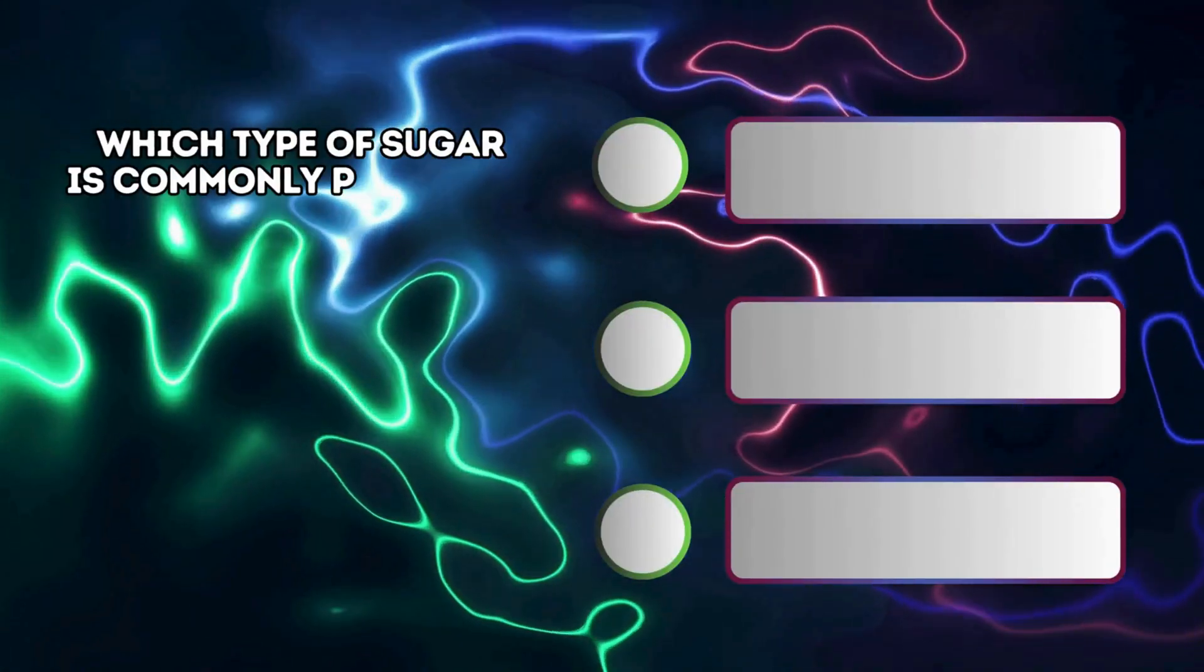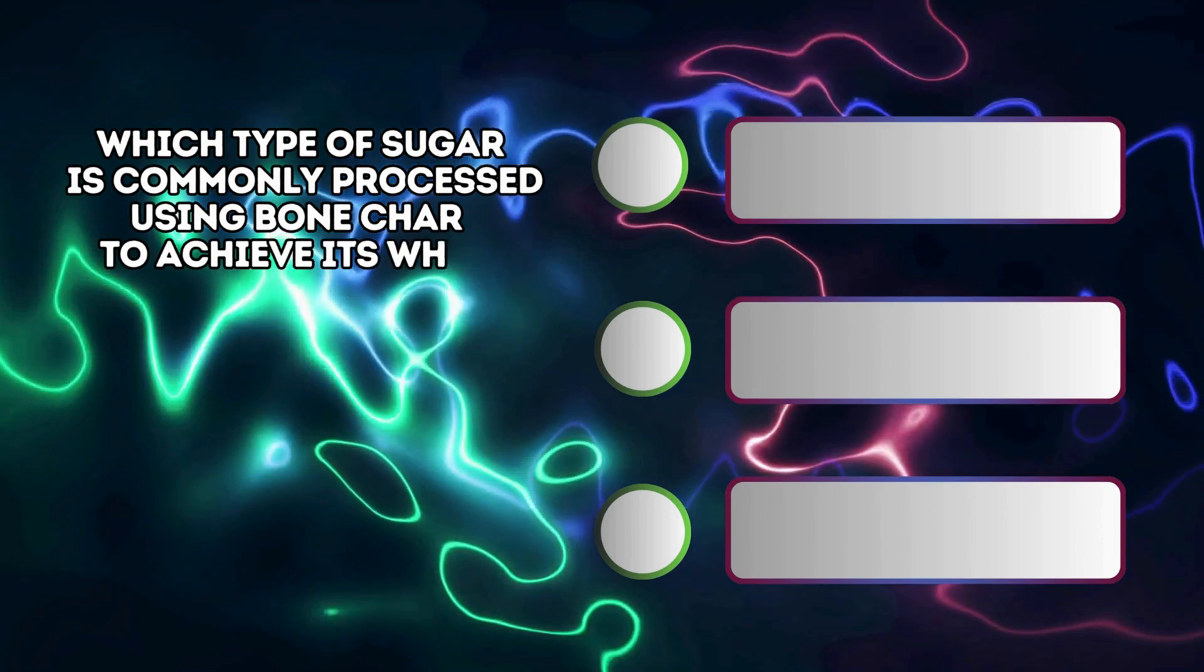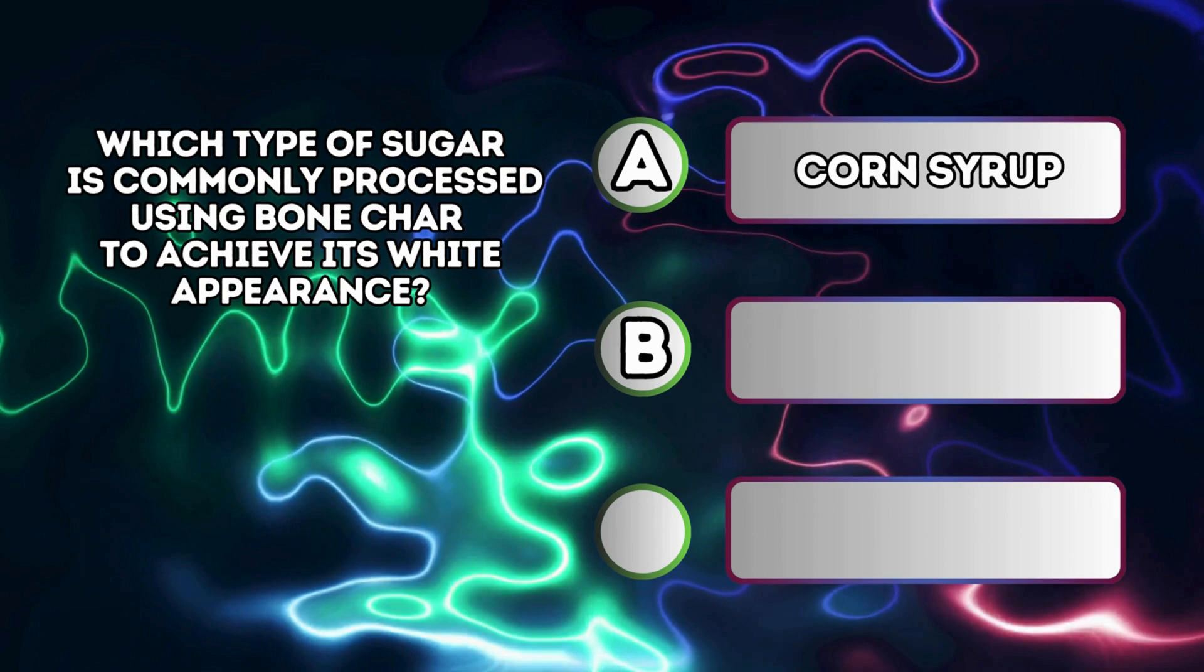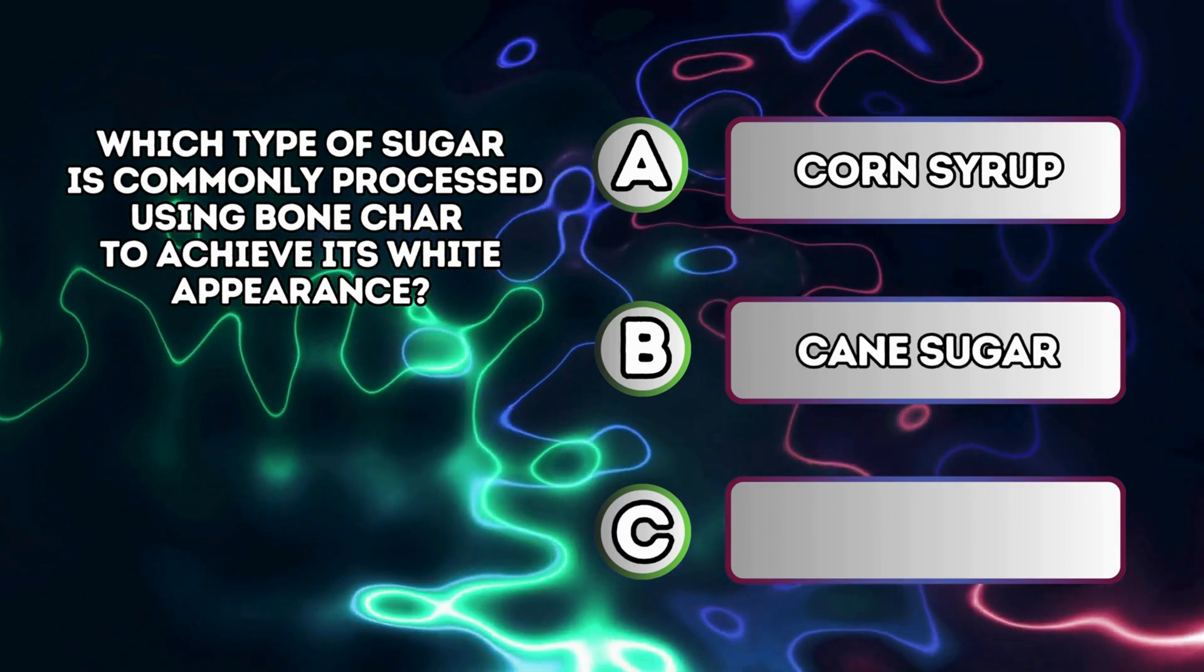Which type of sugar is commonly processed using bone char to achieve its white appearance? A. Corn syrup B. Cane sugar C. Maple sugar